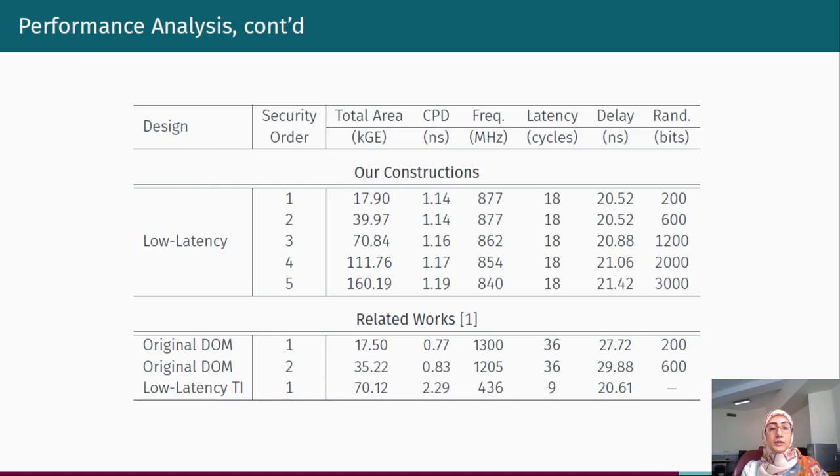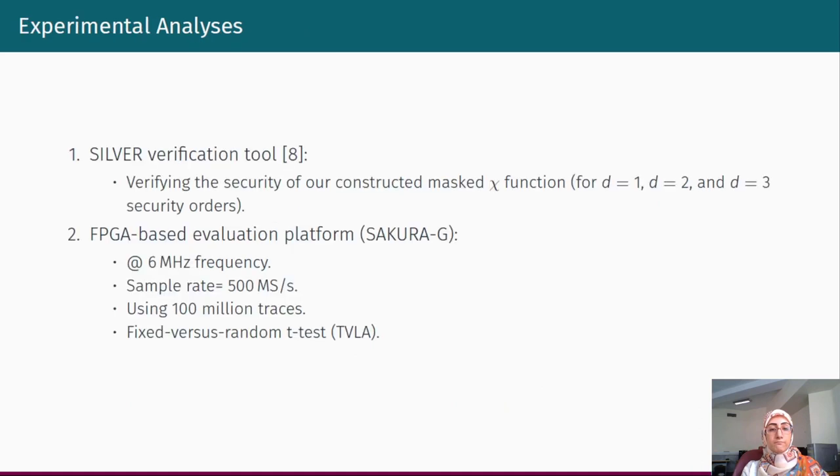Here we have reflected the detailed results of implementing our design with security orders 1 to 5 and the results of the related works. We have also performed some experimental analysis including the verification of the security of our constructed masked Chi function using SILVER verification tool and FPGA based evaluation using SAKURA-G platform. We have used 100 million traces to perform fixed versus random T-test for first, second, and third order implementations.